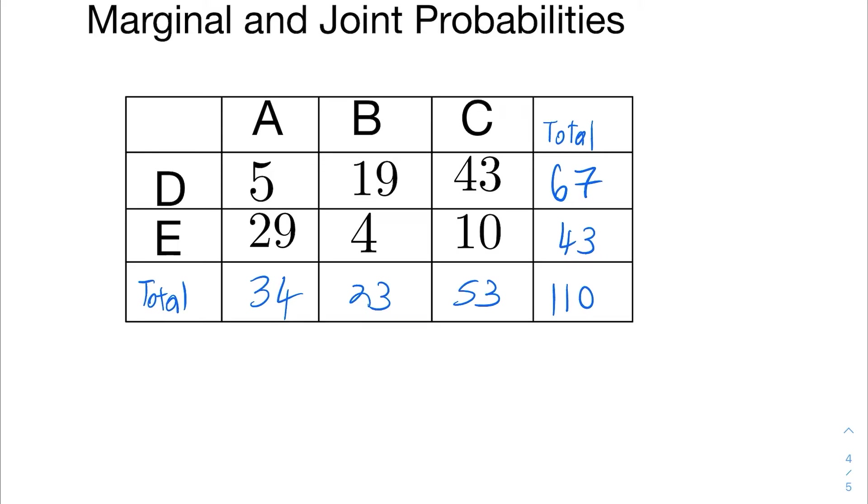For instance, in the bottom margin there, if I wanted a probability of A, that would be column A's total 34 divided by the total of 110. And that's going to be equal to 0.3091, if you round it to four decimal places. So that's how you'd find the marginal probability of A, the probability of only A.